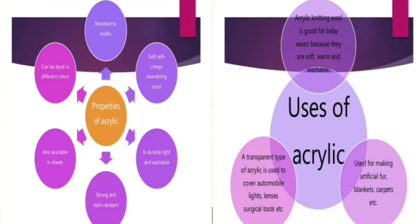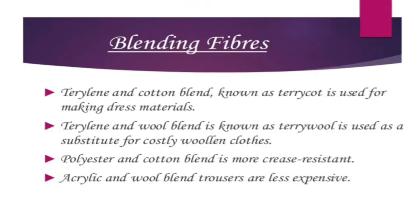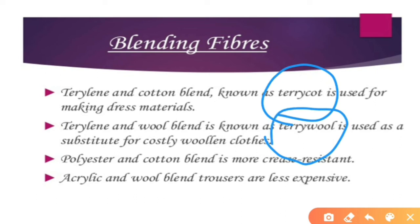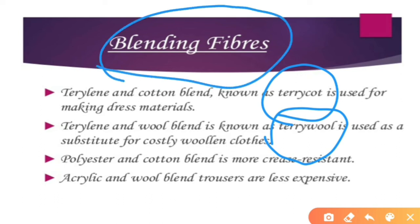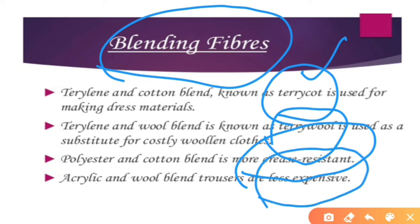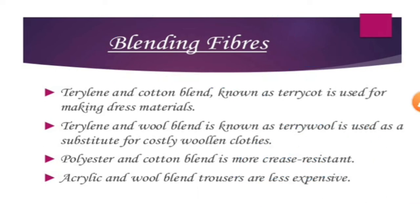A new term not in your book: blending fibers. We already saw the example of terry cot and terry wool. When we mix two kinds of fiber together and blend them, they are called blending fibers. If a one-mark question asks which is a blended fiber, you can understand: polyester and cotton blended together give increased resistance and are less expensive.